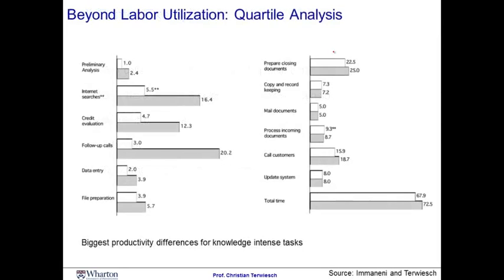To analyze such variation in processing times across operators, I find it is helpful to just collect a sample of processing times for each operator. The average processing time across these operators will vary. Instead of simply comparing the best operator and the worst operator based on the averages, I show what's called a quartile analysis. The quartile analysis compares the highest quartile performing operator — that means the operator who still has 25% of other operators faster than him or her — with the bottom quartile operator, i.e., the operator who has 75% of the other operators faster and 25% slower.